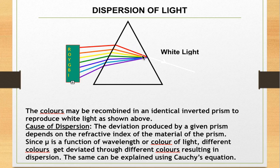As you can see in this diagram, these seven colors - violet, indigo, blue, green, yellow, orange, red - on entering the prism they recombine and we get back white light. Now what's the cause of dispersion? The deviation produced by a given prism, we mean the prism of a particular angle and a particular material, depends on the refractive index of the material of the prism. Since refractive index mu depends on wavelength or color of light, different colors violet, indigo, blue, etc., are deviated through different angles.